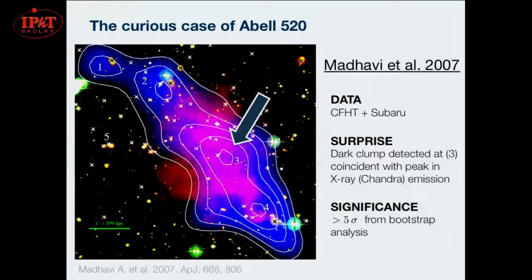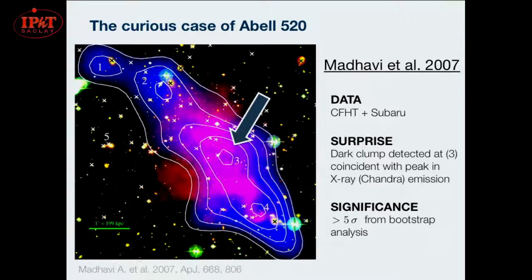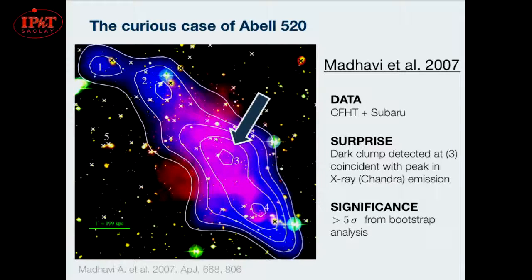Now I'll talk about A520. Here's the mass map by Madhavi et al., who first studied this merger with weak lensing in 2007. They used a combination of ground-based data from CFHT and Subaru. They were the first to notice that somewhere in between the two initial clusters — up here is one and down here is the other — there is an overdense region that doesn't seem to have the attendant number of galaxy members you would expect. So it's a very high mass-to-light ratio region. They called it a dark clump, and the contours are the mass, which coincides with the x-ray emission.